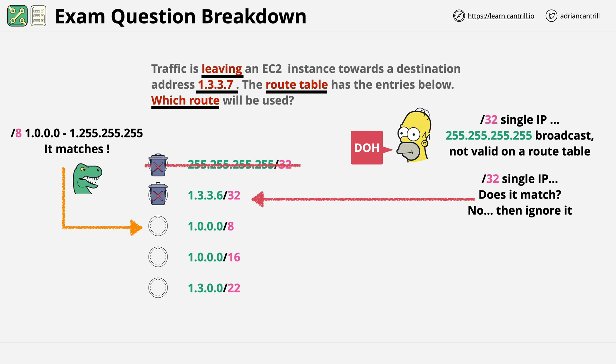Now answer 4 is 1.0.0.0/16. This is a /16 prefix, which means the first two octets need to match our IP address. And this isn't the case. 1.0.0.0/16 matches 1.0.0.0 through to 1.0.255.255. And this doesn't include our 1.3.3.7 IP address. And so it's wrong and can be excluded.